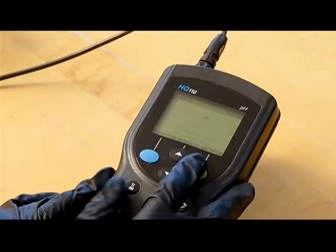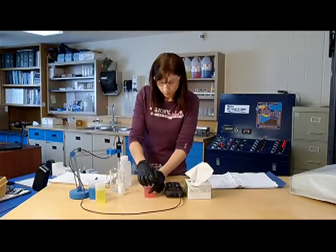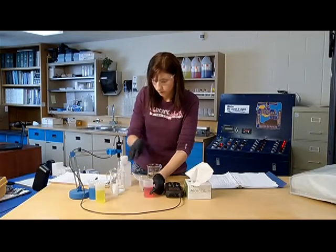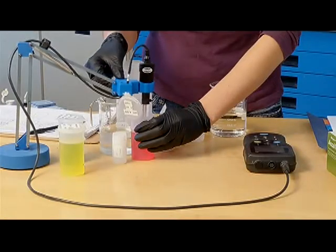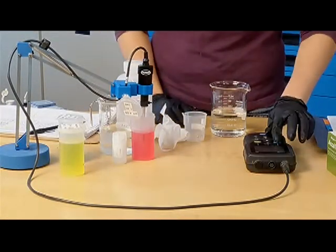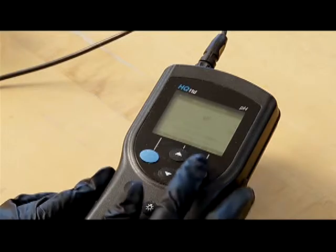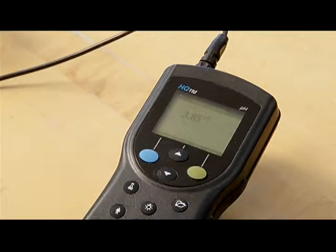The operator starts by setting up the instrument, first by completing a three-point calibration. The first step is completed with a standard pink pH buffer solution of four. In this instance, the instrument walks the operator through the process and tells her when to switch the probe.